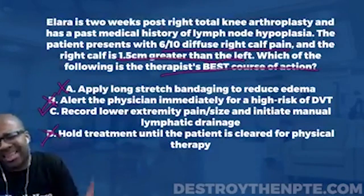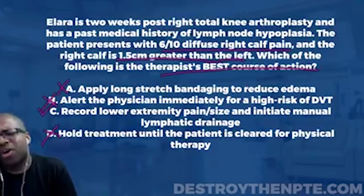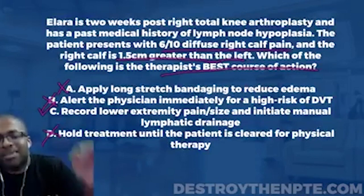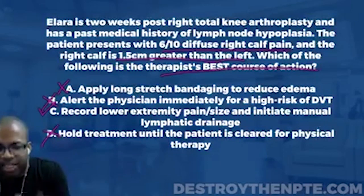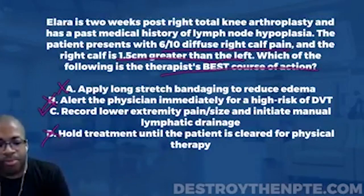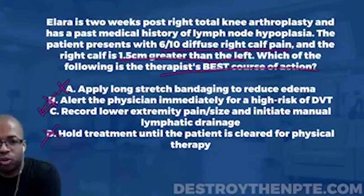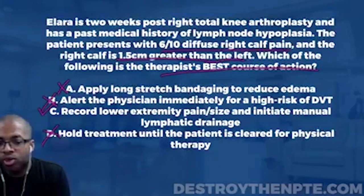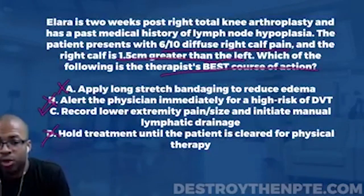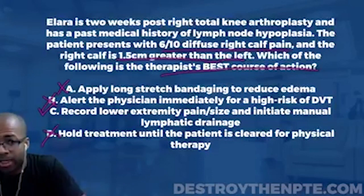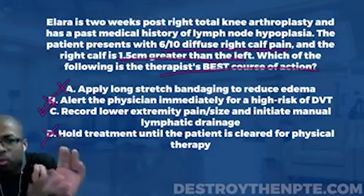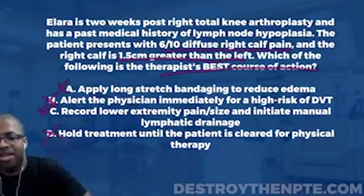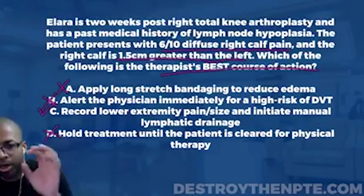Our final answer is C. It may not be a perfect answer, but it is the best option among the choices given. For those who got this correct, congratulations. For those who didn't, the key hidden secret here is understanding clinical prediction rules on the NPTE. If you know them, you can determine the diagnosis and best intervention — because many questions simply ask whether you know the rule and what to do next.